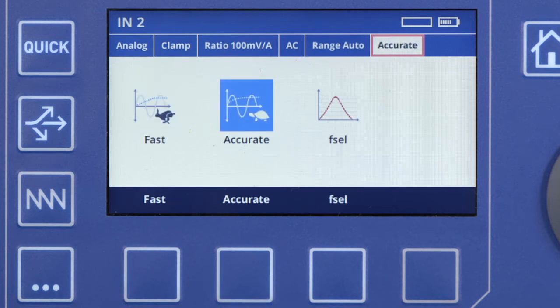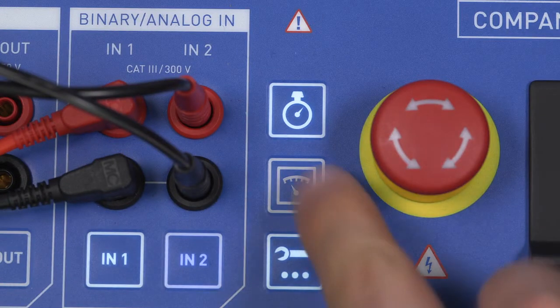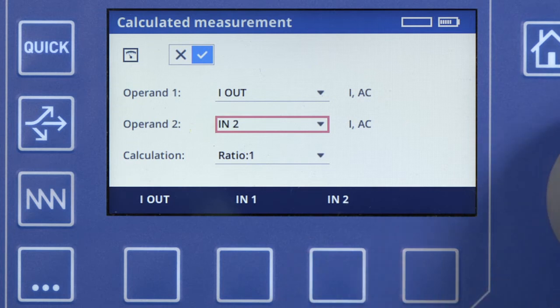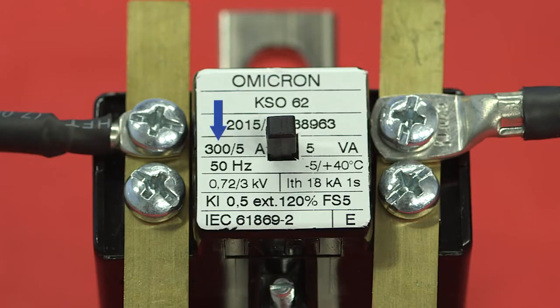Since a ratio cannot be measured directly, we need to define it as a calculated value based on our current measurements. We can do that by pressing the calculated measurement key, switching it on, and subsequently setting I out and IN2 to be our operands. Ratio to 5 will be our calculation setting. We are doing that since our demo CT has a 300 to 5 rating.